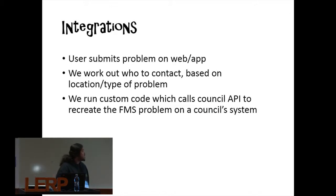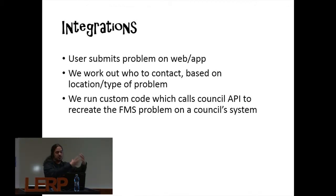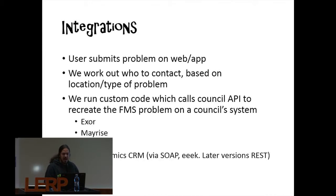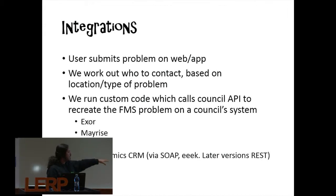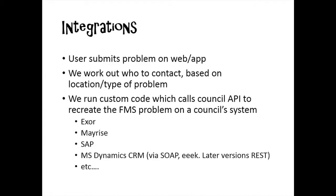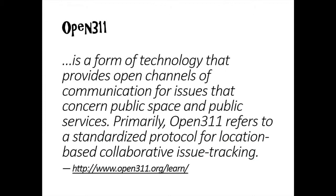We have the idea of integrations. Exactly the same thing happens - we find out who we need to contact and then we call an API on the council systems to pass on that information to their local systems. That then goes automatically to their highways team, street lighting team, or whoever. There are a whole load of these systems - in the UK, lots of councils have things like Exor, Mayrise, Microsoft Dynamics, SAP. Wouldn't it be nice if there was a standard that we could just target one particular protocol? It turns out there is one that is somewhat popular, called Open311. It was developed in the United States and Canada, where 311 is the phone number people use to contact their council.